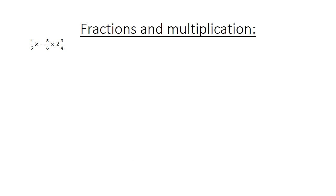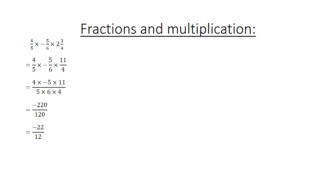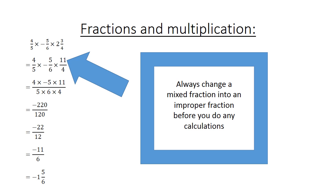Fractions and multiplication — more examples: 4 over 5 times negative 5 over 6 times 2 and 3 over 4. Convert the mixed fraction to an improper fraction: 2 and 3 over 4 becomes 11 over 4. Numerator: 4 times negative 5 times 11. Denominator: 5 times 6 times 4. That equals negative 220 over 120. Simplify to negative 22 over 12, then negative 11 over 6, which as a mixed fraction is negative 1 and 5 over 6. Always change the mixed fraction into an improper fraction before doing any calculations.